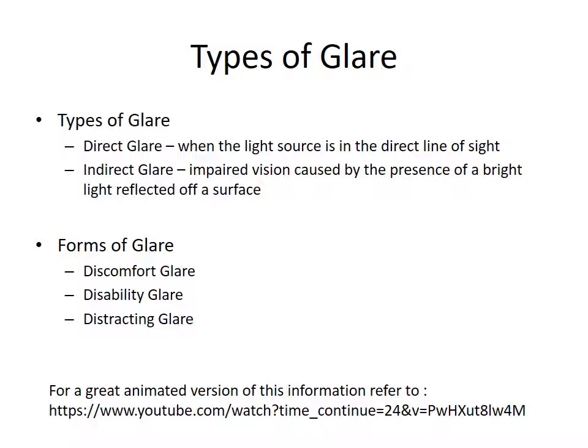Disability glare, on the other hand, causes an actual reduction in visual performance. There is reduced visibility of what is seen due to the presence of a light source within the visual field. It occurs when the light source from the glare source is scattered by the ocular media, in particular the cornea and the lens. This scattered light forms a veil of luminance, which reduces the contrast and thus the visibility of the target. Disability glare can be so intense that it could actually be blinding.